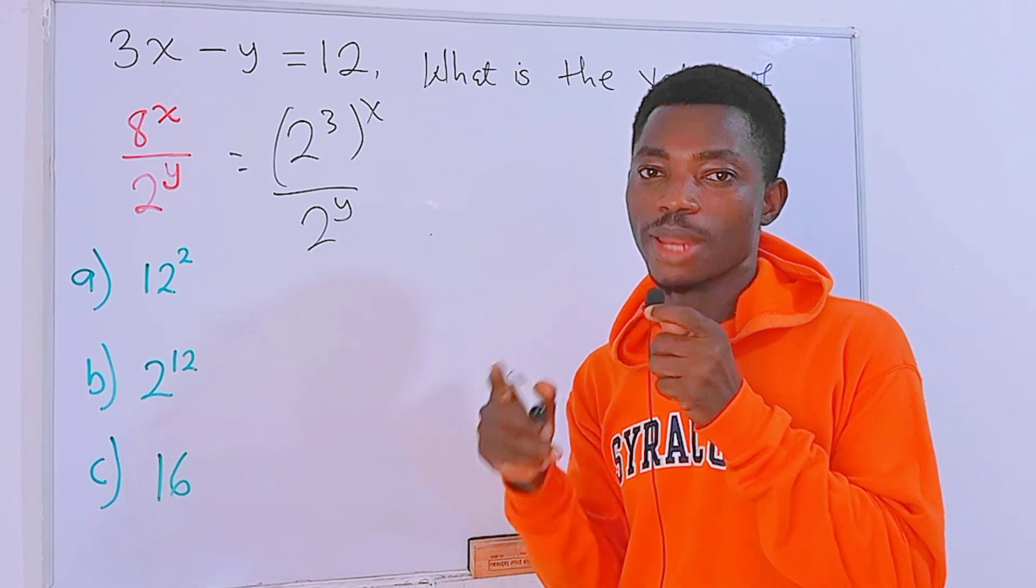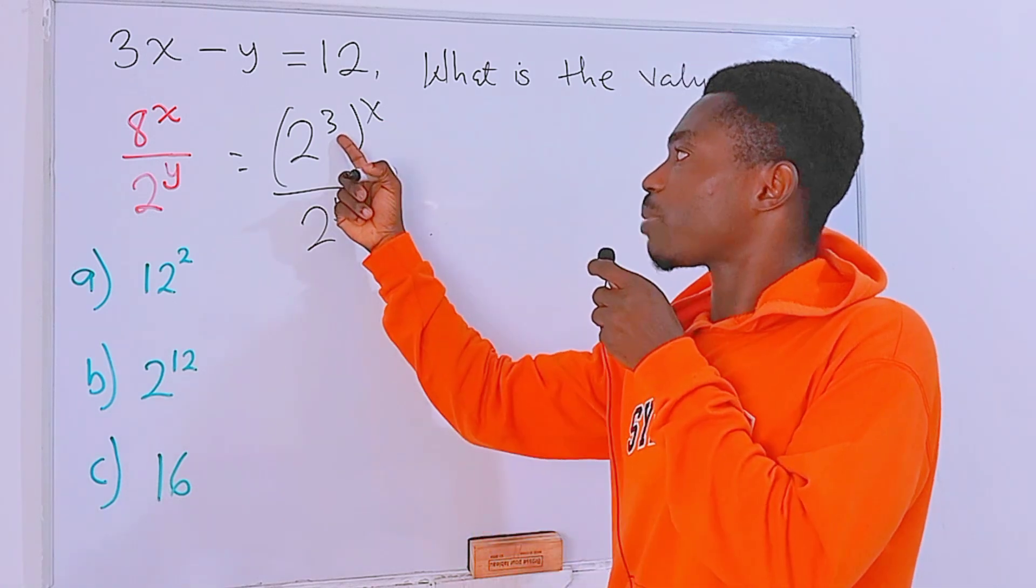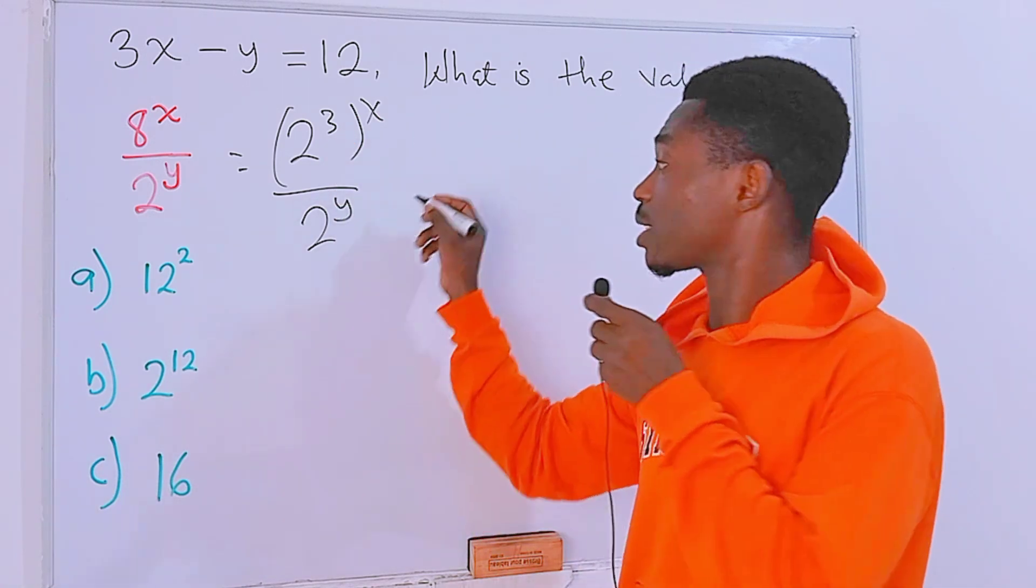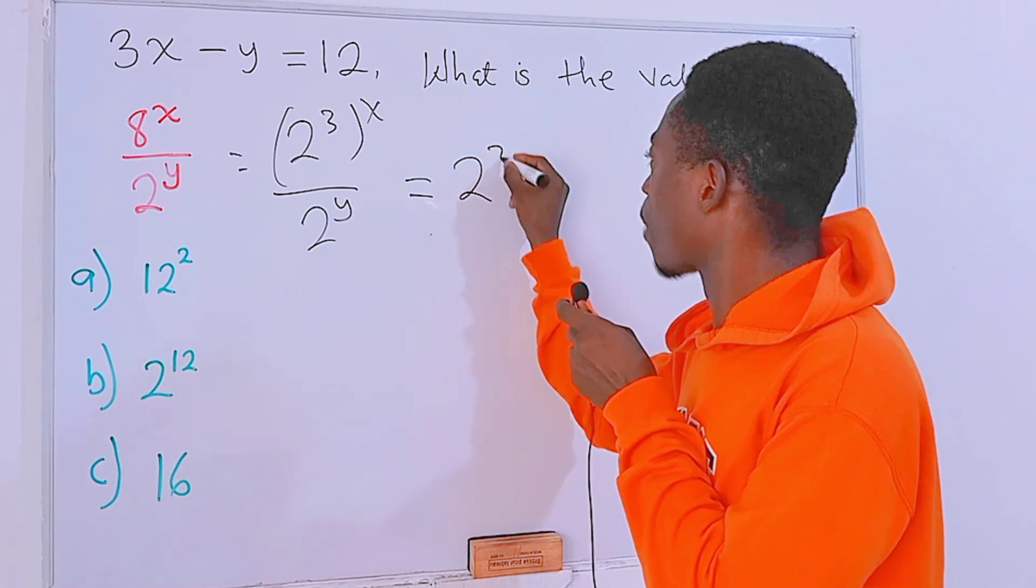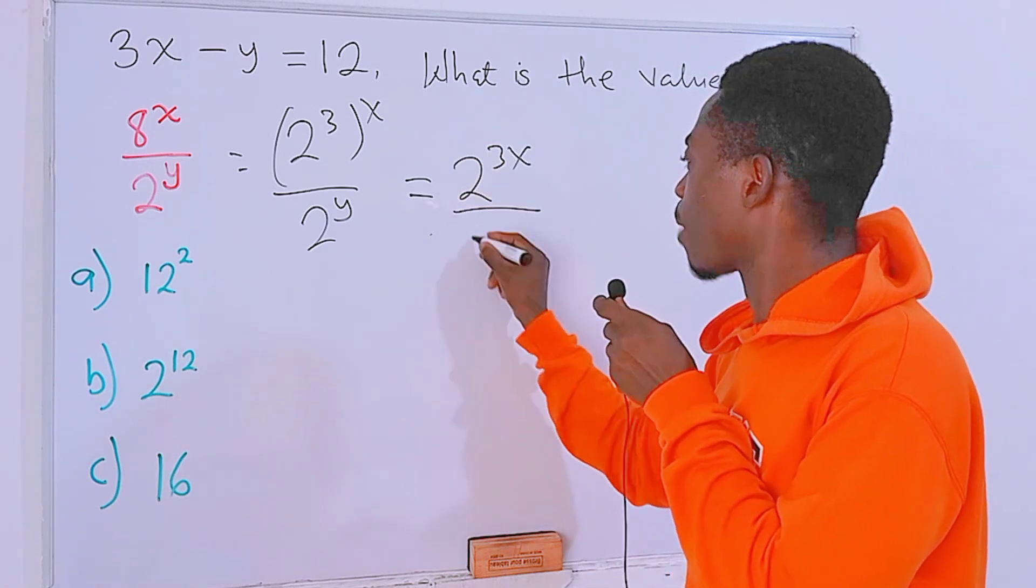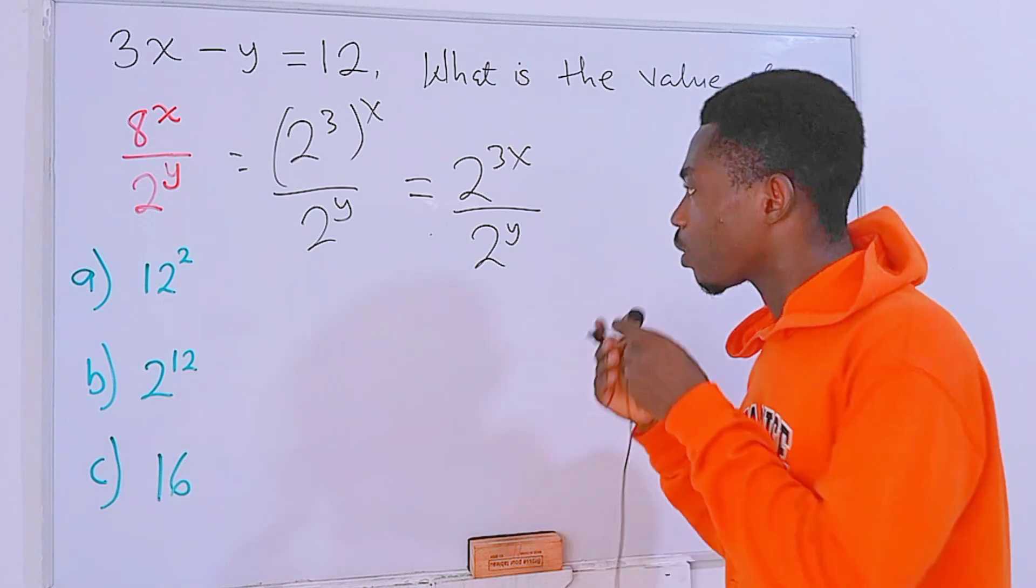If this happens, we can actually multiply the powers, meaning we can multiply this away by this x. So we have 2 to the power 3x divided by 2 to the power y.